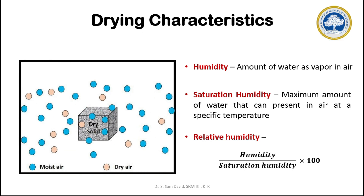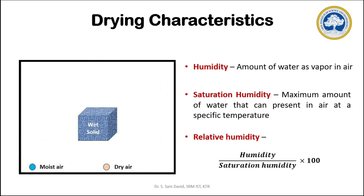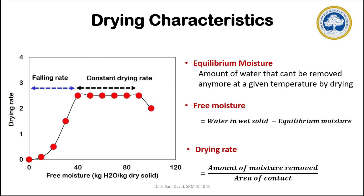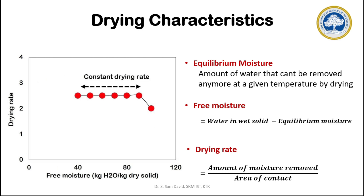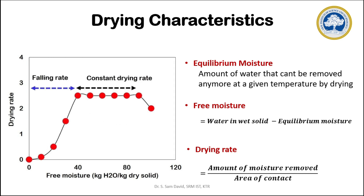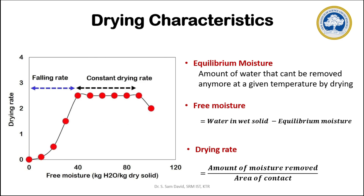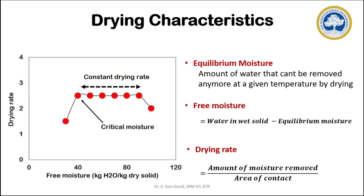The amount of water that can move from the wet material to the air depends on temperature and the existing humidity level. The next three important definitions are equilibrium moisture, free moisture, and drying rate. At given atmospheric conditions of temperature and pressure, there is a level beyond which water cannot be removed from the wet material. That minimum amount of water retained is termed equilibrium moisture content. The difference between the total water in the wet solid and the equilibrium moisture is called free moisture — it is the amount that can actually be removed. Drying rate is the ratio of the amount of moisture removed to the surface area available for contact between the wet material and the air.